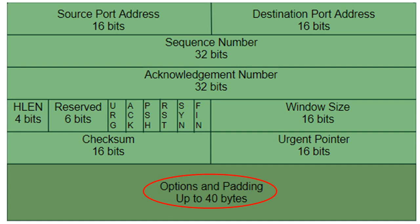The options and padding field is the last field in the TCP header. The TCP segment option field consists of 0 or more 32-bit words and provides a way to deal with limitations of the original header. The MSS (Maximum Segment Size) is defined as the largest block of data that a sender using TCP will send to the receiver. Padding is used to ensure that the IP packet header has a length that is a multiple of 32 bits, needed because of the varying length of the option field.